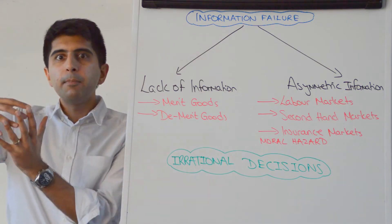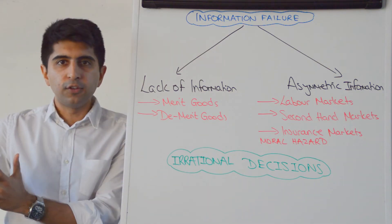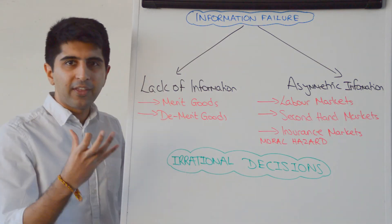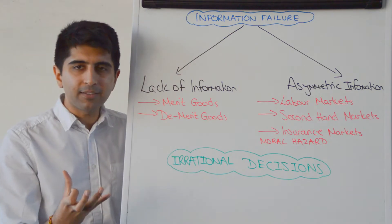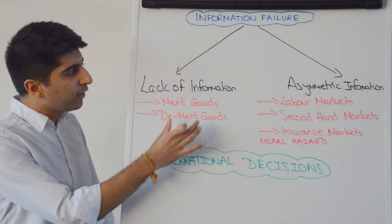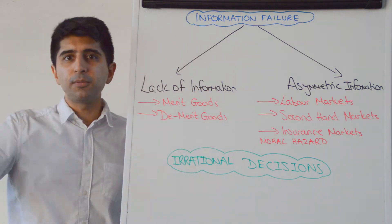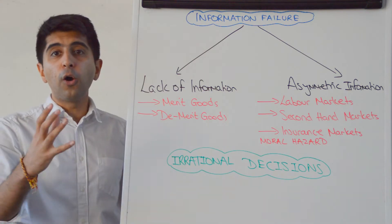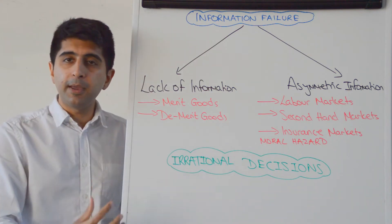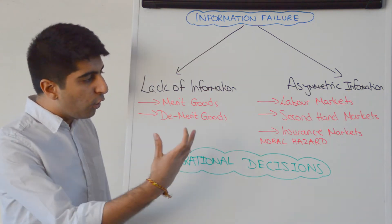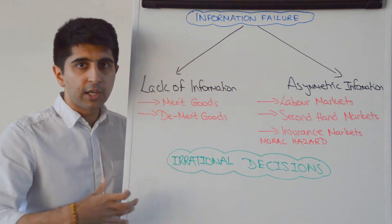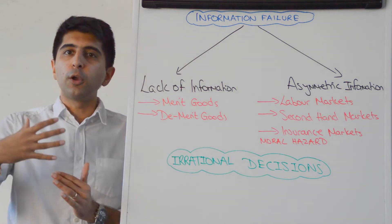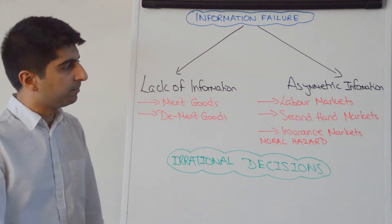As a result, maybe more is consumed than should be. More is consumed than is utility maximising because there is a lack of information — because maybe there isn't enough information at all, or maybe because the information is not clearly presented. The overconsumption, we could argue, is irrational if we are going beyond utility maximisation.